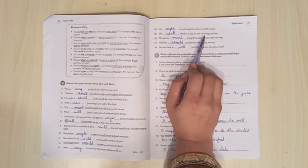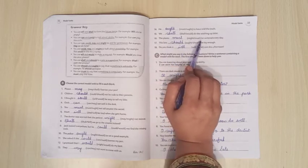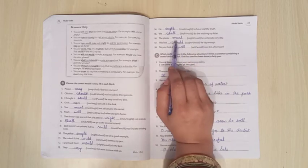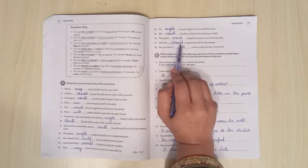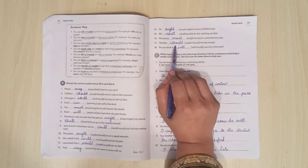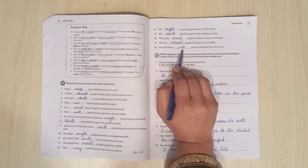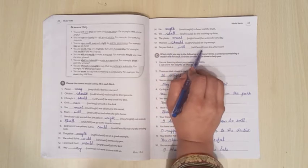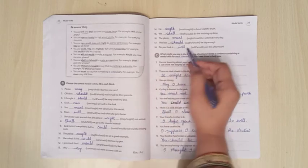We shall do the washing up later. Shall will be used here to form the future tense. The plants must be watered every day. Must will be used here because to say about something is compulsory. This box should be big enough. Should will be used here to say that something is advisable. Do you think it will rain this afternoon? Will be used here to form the future tense.